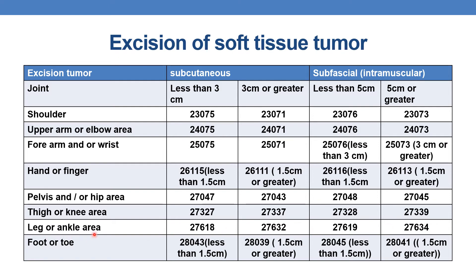Coming to leg or ankle area. For excision of subcutaneous soft tissue tumor: if less than 3 centimeters, CPT is 27618; if 3 centimeters or greater, CPT is 27632. For excision of intramuscular soft tissue tumor: if less than 5 centimeters, CPT is 27619; if 5 centimeters or greater, it is 27634. (Note: the intramuscular less-than-5cm code is 27619, not 27618.)